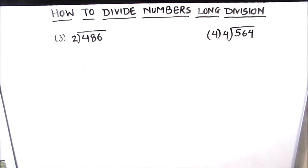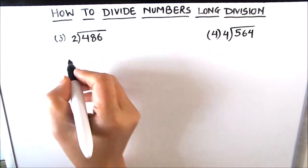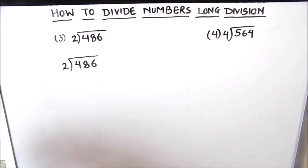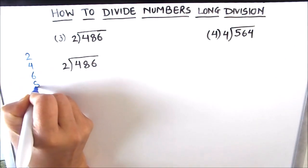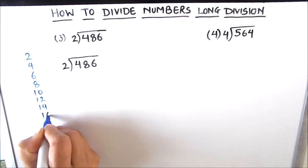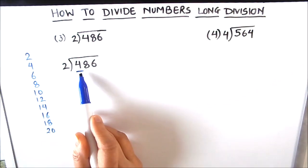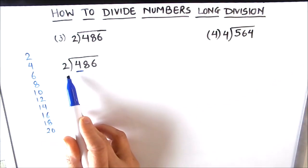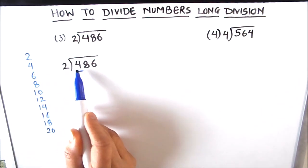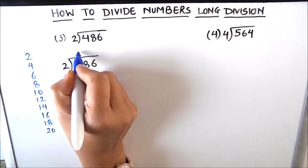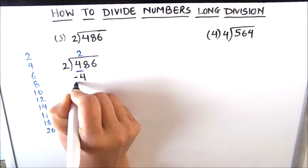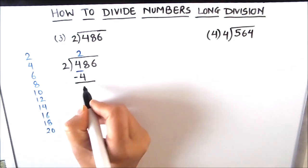Example number 3: the next number to be divided is 486 divided by 2. First we write the tables of 2: 2, 4, 6, 8, 10, 12, 14, 16, 18, and 20. Since 4 is bigger than 2, we can divide 4 by 2. Checking the tables: 2×2=4. The first digit in the quotient is 2. We write 4 just below 4 and subtract: 4 minus 4 is 0.